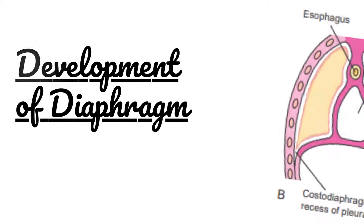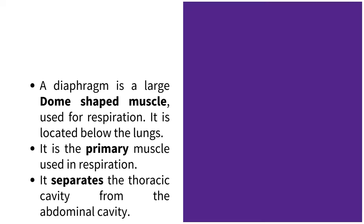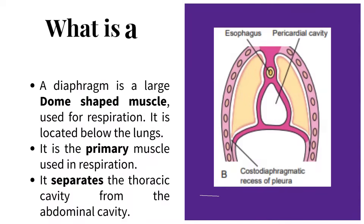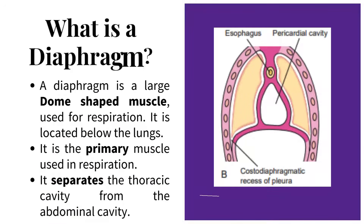Development of the diaphragm. The diaphragm is a large dome-shaped muscle used for respiration. It is located below the lungs, and it is the primary muscle used in respiration. It separates the thoracic cavity from the abdominal cavity.